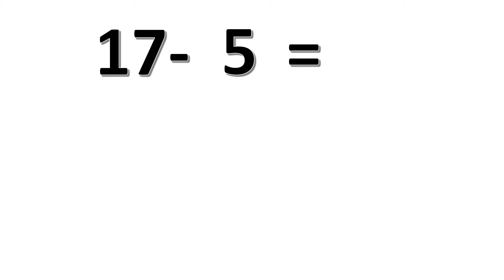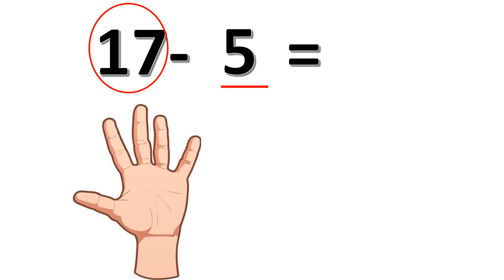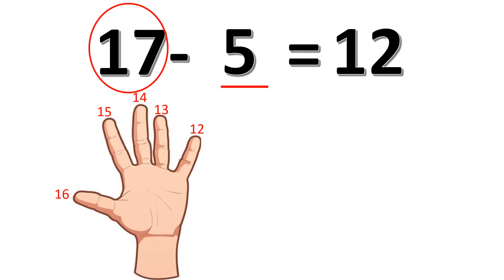Okay kids, let's do another example: 17 minus 5. Which one is the bigger number here, 17 or 5? Yes, 17 is the bigger number. So let's count backward from 17. 5 is the smallest number, so let's have 5 fingers up. Start from 17, we're going to count backward: 17, 16, 15, 14, 13, 12. So 17 minus 5 is equal to 12.